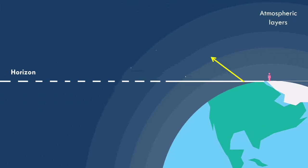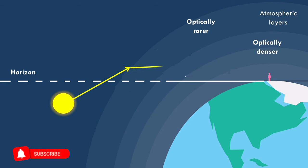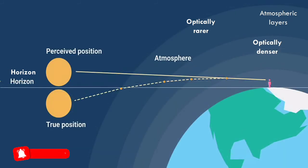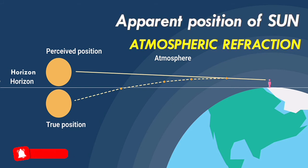When the sun is slightly below the horizon, the sun's light coming from less dense air to more dense air is refracted downwards as it passes through the atmosphere. Because of this atmospheric refraction, the sun appears to be raised above the horizon when actually it is slightly below the horizon. Thus, we can see the sun about two minutes before the actual sunrise and two minutes after the actual sunset because of atmospheric refraction.